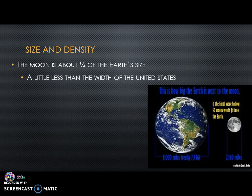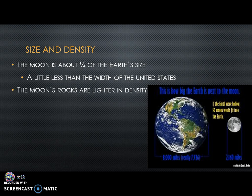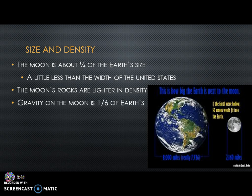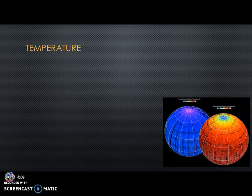The moon is about one-fourth of Earth's size — a little less than the width of the U.S. The rocks on the moon are less dense overall than Earth's, because Earth has heavy elements in its core while the moon is mostly made up of lighter elements similar to Earth's crust. The moon's gravity is only one-sixth of Earth's, so to find your weight on the moon, divide your Earth weight by six.